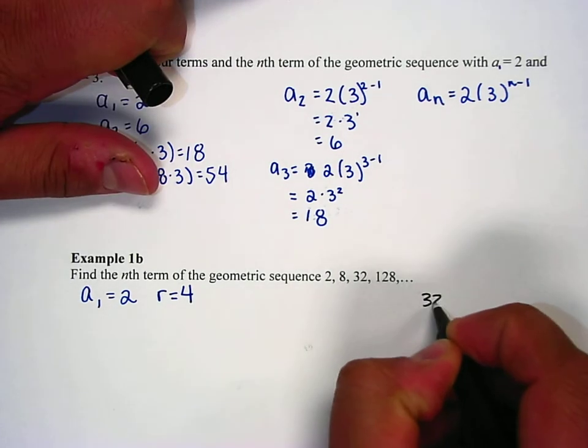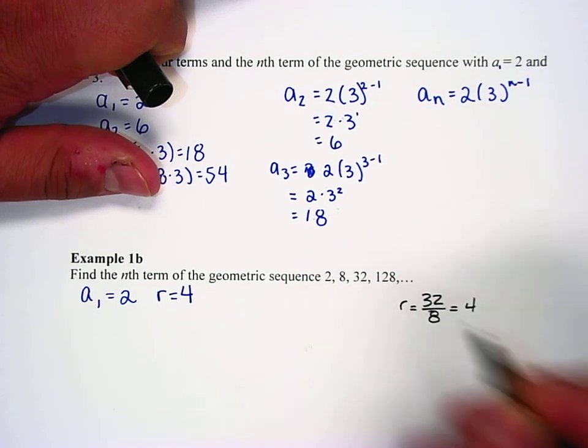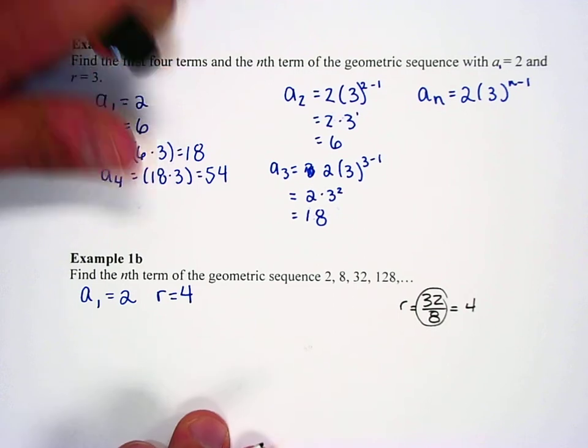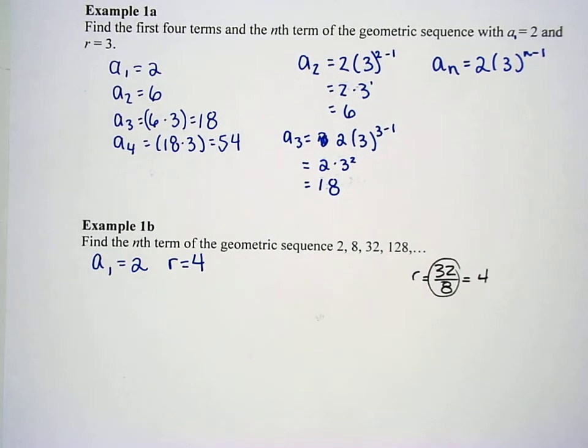2 times what is 8? 4. So r equals 4. And we can check that by saying 4 times 8 is 32, 32 times 4 is 128. Or if we didn't know, we can just take 32 divided by 8, and that would be 4. And that's how we find the common ratio.